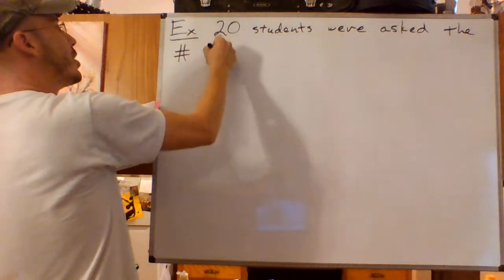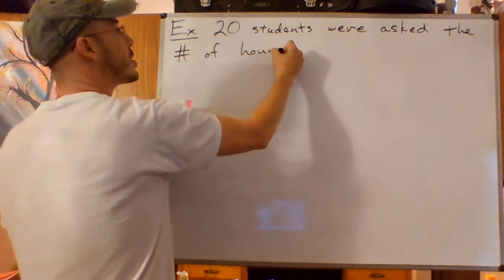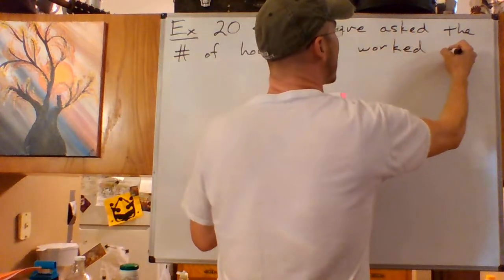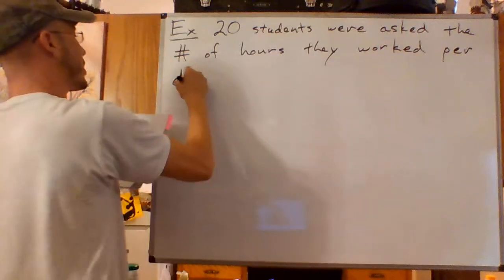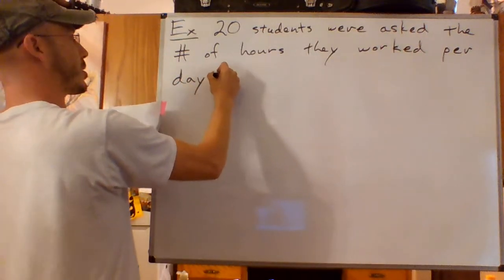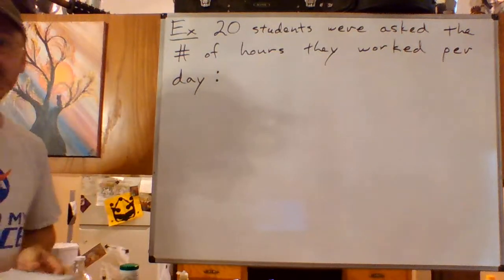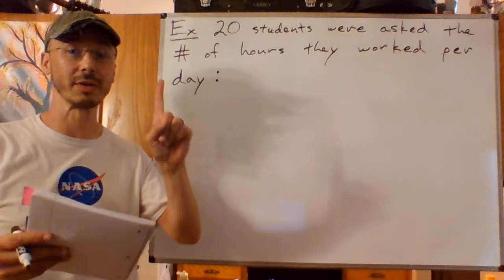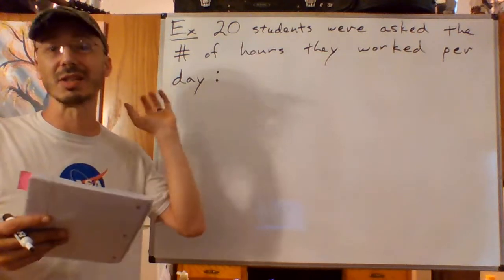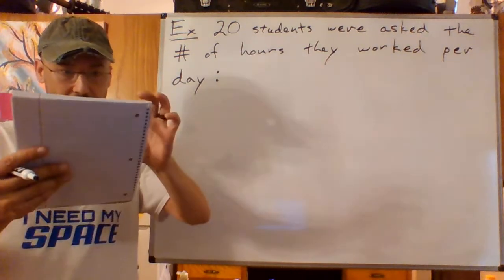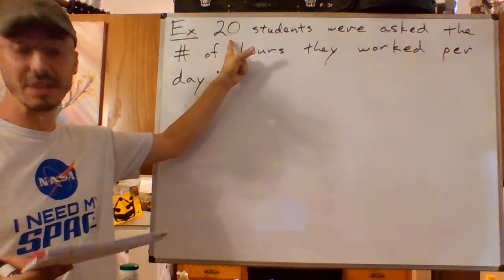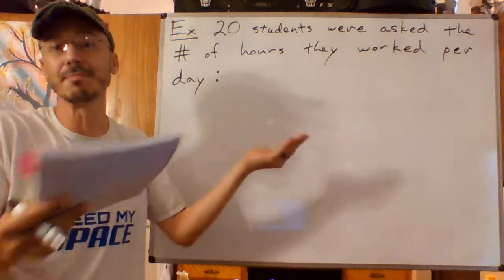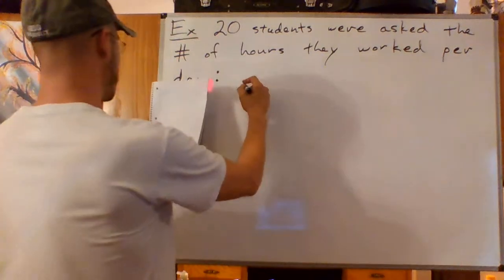This example has 20 students who were asked the number of hours they worked per day. And I've got a list of data. It's not organized, well it's a little bit organized, it's in order that helps a little bit, but it's just a list of numbers. There are 20 of them.